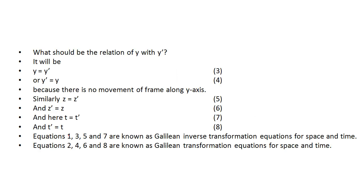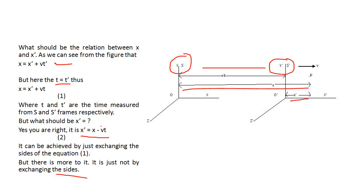Here minus sign in this relation, equation number 2, this minus sign is not due to the exchange of sides. Minus sign is due to the change in the observer. For the equation 1, according to this observer, this frame is moving with plus V velocity. For the equation 2, according to this observer O dash, this frame is moving with a negative velocity. That is in an opposite direction. That is why there is minus sign.